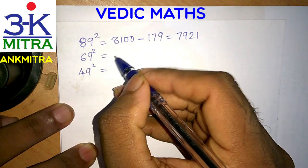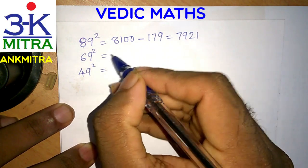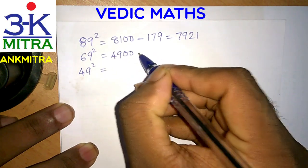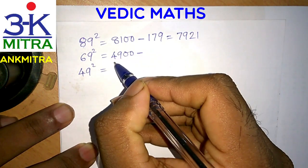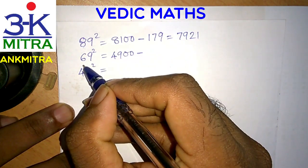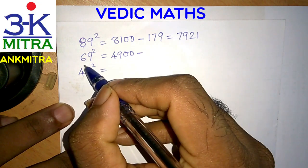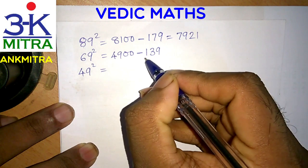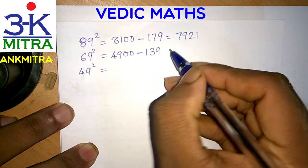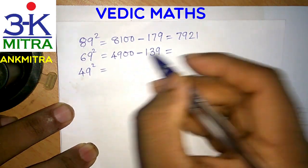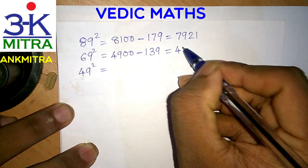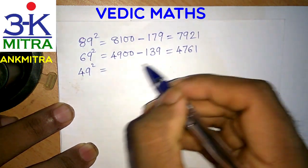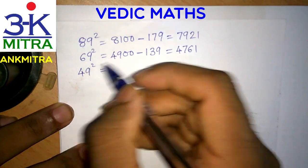The first step is to write down the perfect square of 70, which is 4900. Then subtract the sum of 70 and 69. The sum of 70 and 69 is 139, so 139 is to be subtracted from 4900. The answer we get is 4761, and this is the perfect square of 69.